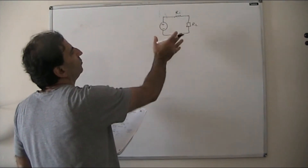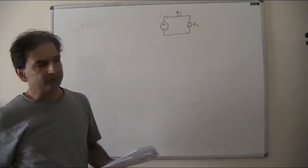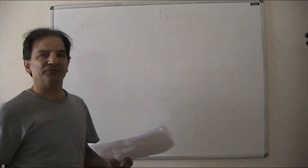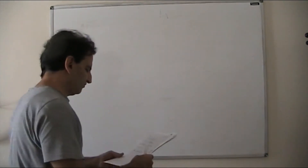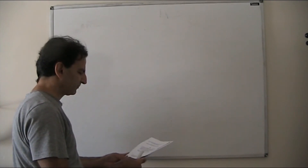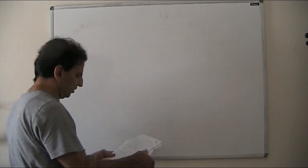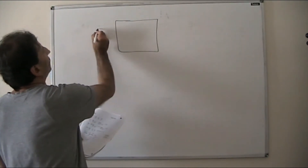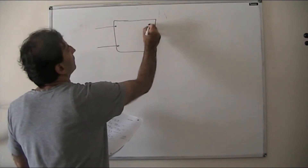Now we want to have two of these — one for the input and one for the output basically. So, we want to represent this amplifier as a two-port block. My two-port block would be a block with an input and an output.